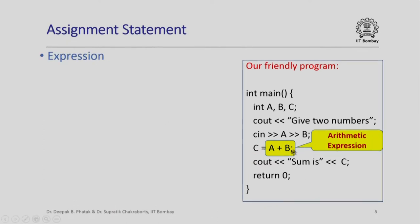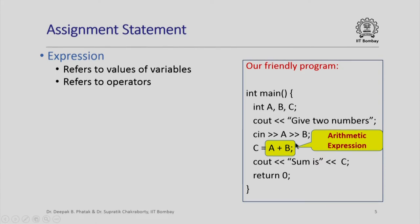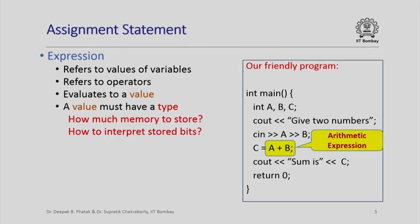The right-hand side of the equal sign in an assignment is an arithmetic expression. An arithmetic expression refers to values of variables — here we have A and B — and to operators — here we have the plus operator — and it evaluates to a value. For every value that a C++ program computes we must have a type. The type tells the compiler how much memory to allocate and how to interpret the bits stored in those memory locations. Since an expression evaluates to a value and every value must have a type, an expression must also have a type.